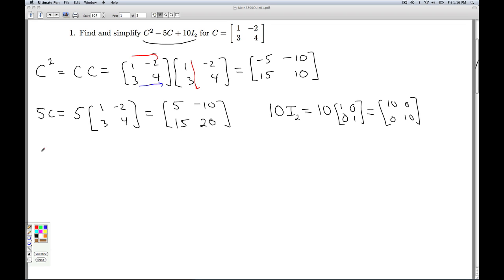Okay, so what's our final answer then? C squared minus 5C plus 10I₂. C squared is the matrix negative 5, negative 10, 15, 10.